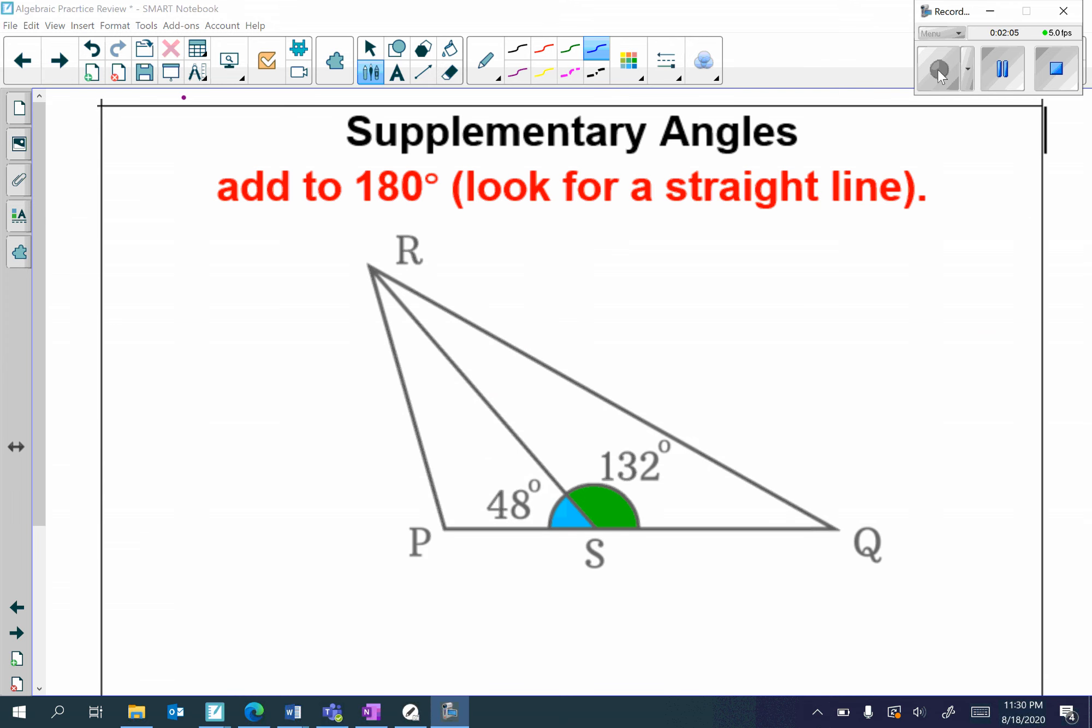Next, I have supplementary angles. Supplementary angles add to 180 degrees and you should look for a straight line. Remember, the S in supplementary can turn into an 8, which means 180 degrees.